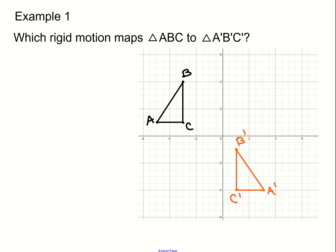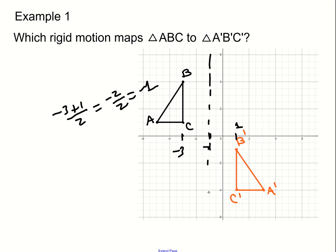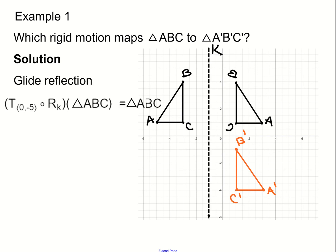Notice that B is at an x-coordinate of 1 and this B here is at an x-coordinate of negative 3. What's halfway between 1 and negative 3? You add those together: negative 3 plus 1, then divide by 2. You take the average or midpoint, and you get negative 2 divided by 2, which is negative 1. So the midpoint is at negative 1. We'll call that line K, and line K has the equation x equals negative 1, which we got by averaging the x-coordinates for B, C, or even A.